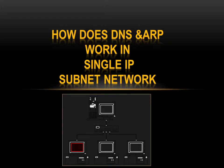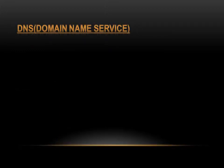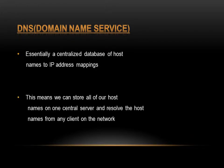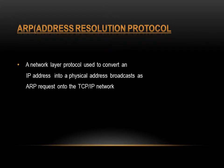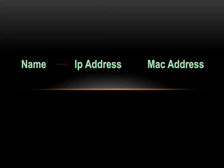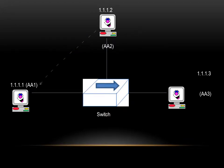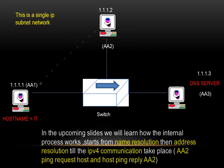How does DNS and ARP work in a single IP subnet network? DNS stands for Domain Name Service, and ARP stands for Address Resolution Protocol. This is a single IP subnet network, and in the upcoming slides we will learn how the internal process works.